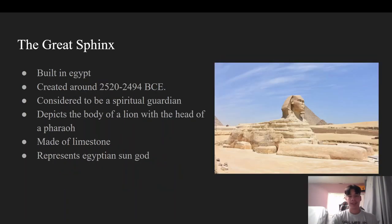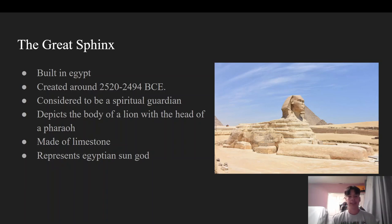Next I will be talking about probably the most iconic of these art pieces, the Great Sphinx from ancient Egypt. This iconic work was built in Egypt and created around 2520 to 2494 BCE. It is considered to be a spiritual guardian to the ancient Egyptians. The sphinx depicts the body of a lion connected to a human which has a pharaoh headpiece. It is mainly made out of limestone and also represents the Egyptian sun god.